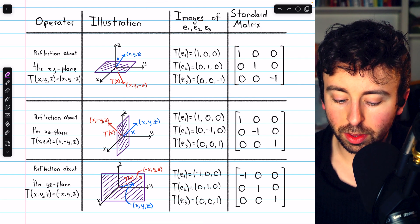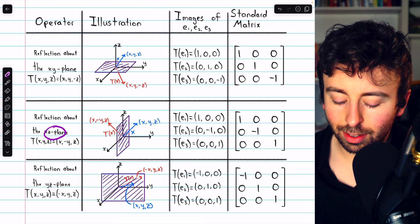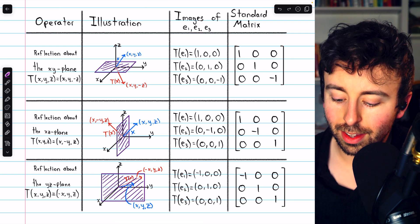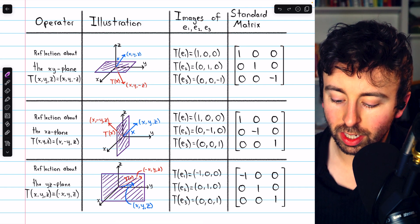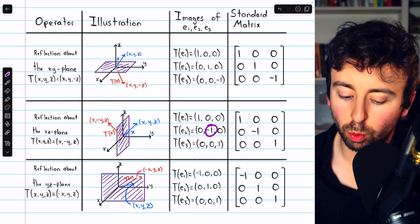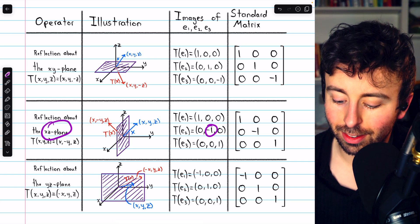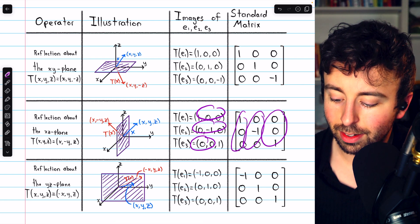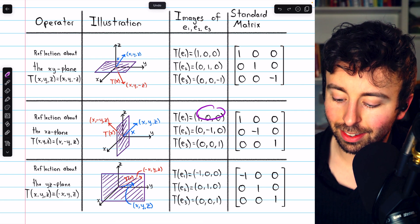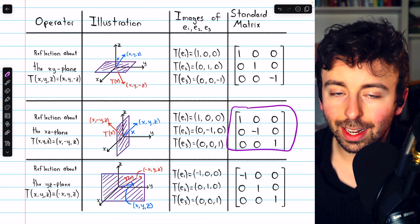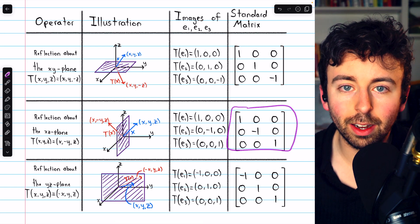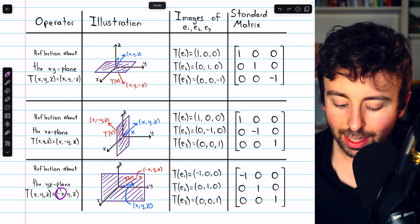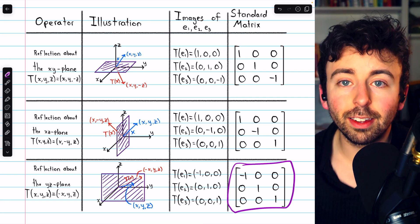For reflection about the x-z-plane, we plug in the standard basis vectors. The only one that gets transformed is (0,1,0), which gets its y-coordinate negated — that's what produces reflection across the x-z-plane. We use those images to build the columns of the standard matrix. Multiplication by this standard matrix carries out reflection about the x-z-plane. Similarly, reflection about the y-z-plane is done by just negating the x-coordinate, eventually leading to its own standard matrix.